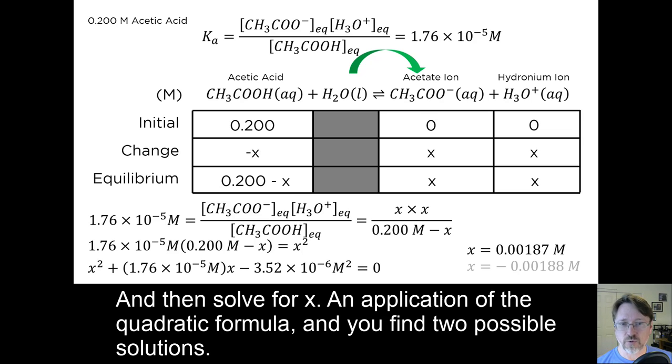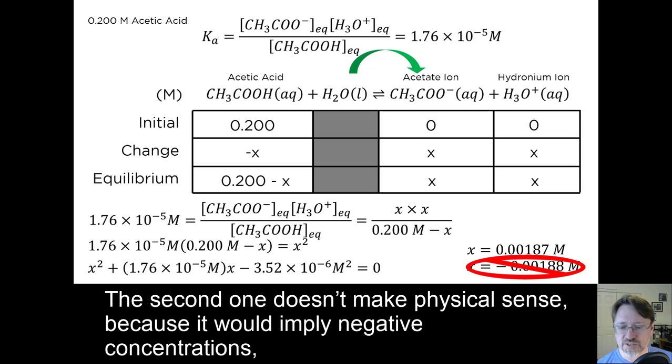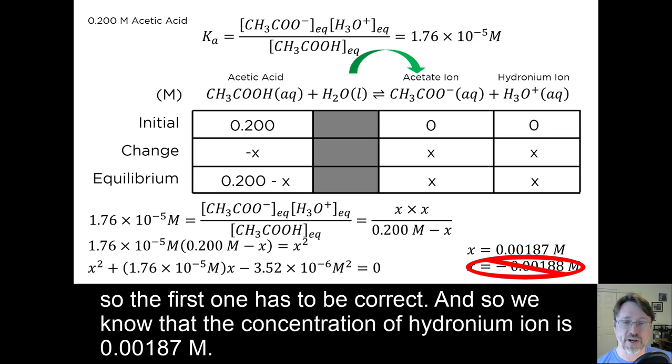An application of the quadratic formula, and you find two possible solutions. The second one doesn't make physical sense because it implies negative concentrations, so the first answer has to be correct. And so we now know that the concentration of hydronium ion is 0.00187 molar.